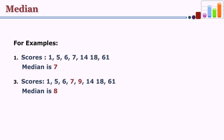Now let us see another example where the distribution has 8 scores: 1, 5, 6, 7, 9, 14, 18, and 61. Here the midpoint is not exact, so the midpoint lies between the 4th and 5th scores. The 4th score is 7 and the 5th score is 9, so the average is 7 plus 9 upon 2, which is 8. So the median of this distribution is 8. This is how we calculate median by arranging scores in ascending or descending order.